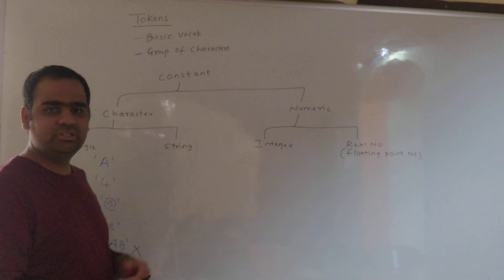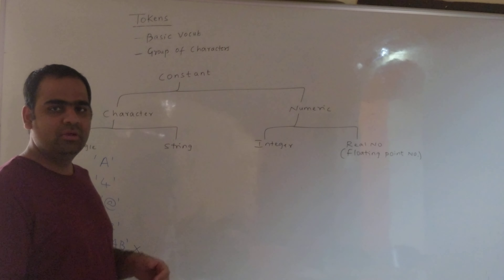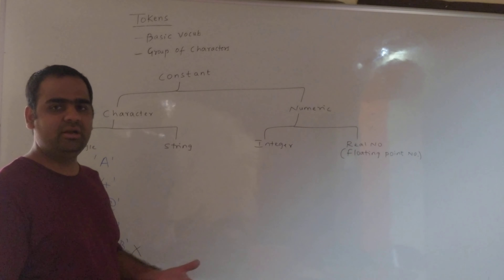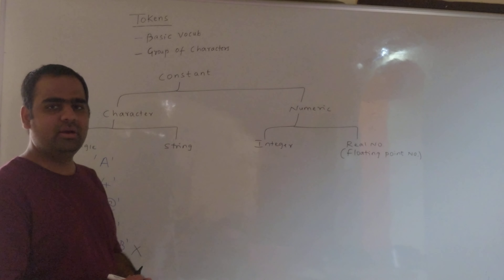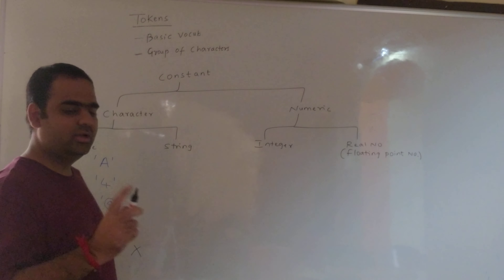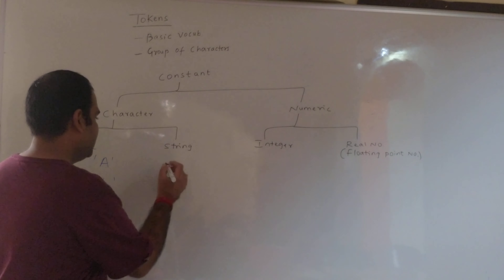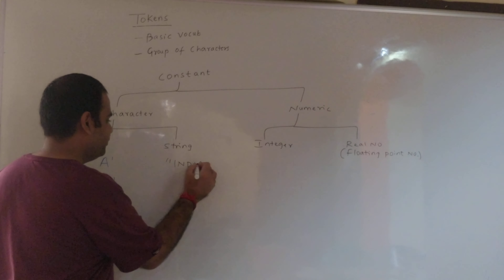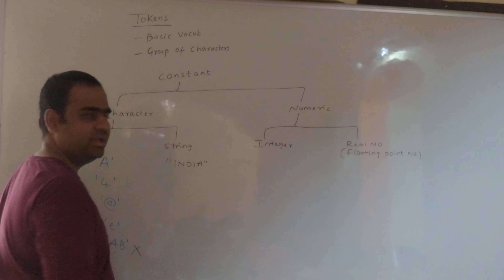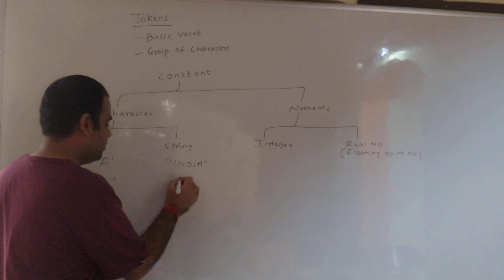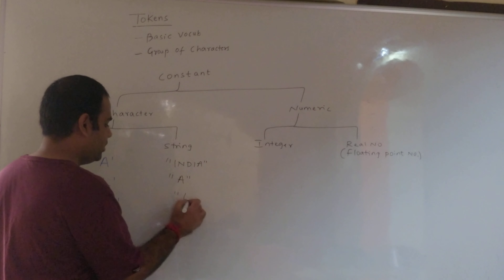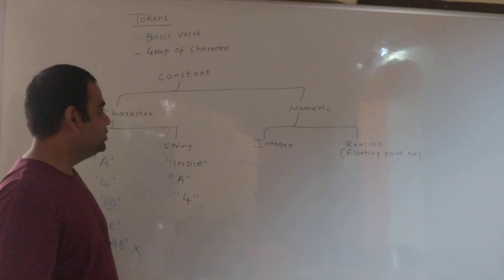The next type of character constant is a string. A string is a group of characters terminated with null. More about strings we will see later. But anything written in double quotes is a string. For example, "India" written in double quotes is a string. "a" written in double quotes is a string. "4" written in double quotes is a string.